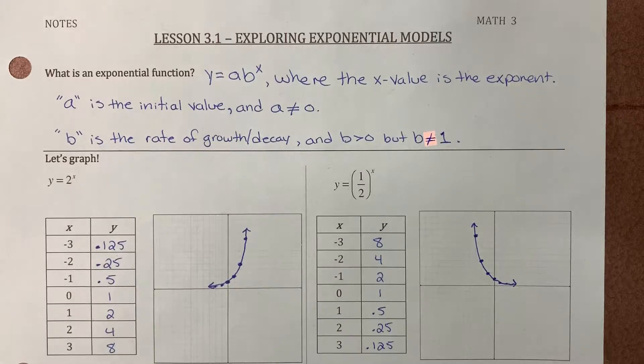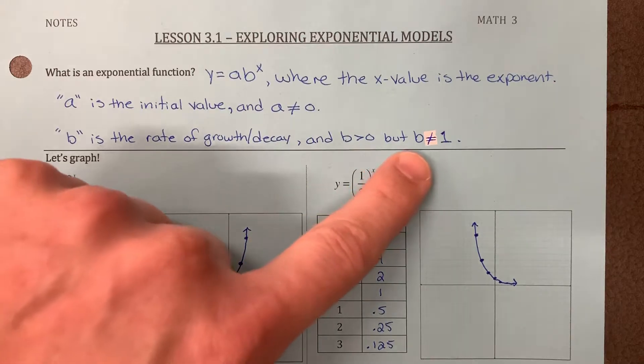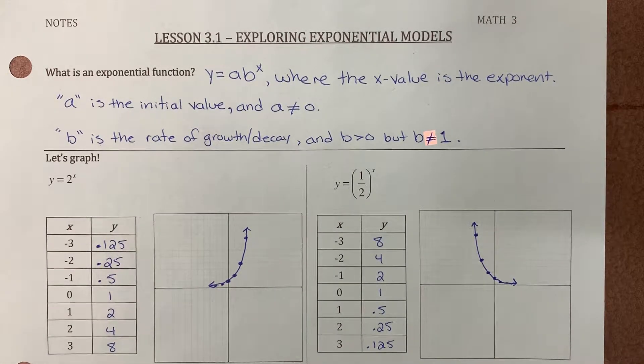Your b value, that is the rate of growth or decay. It could be a growth problem, it could be a decay problem, it's not going to be both at the same time. And the catch with b is that it's going to be a number that's greater than 0, but it cannot be equal to 1. So it can be any value in between 0 and 1, or greater than 1. It just can't equal 1, or be a negative.